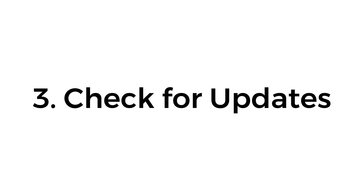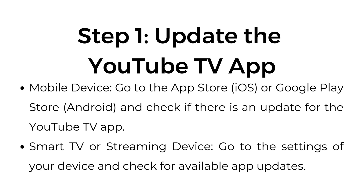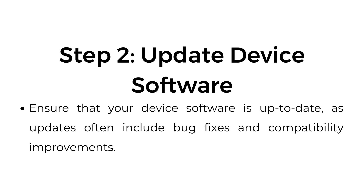Number three: check for updates. Outdated versions of the app or device software can lead to playback errors. On mobile, go to the App Store or Google Play Store and check if there's an update for the YouTube TV app. On a smart TV or streaming device, go to settings and check for available app updates. Also ensure that your device software is up to date, as updates often include bug fixes and compatibility improvements.